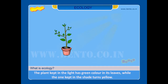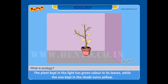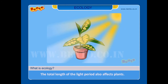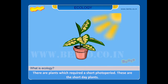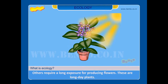The plant kept in the light has green color in its leaves while the one kept in the shade turns yellow. The total length of the light period also affects plants. There are plants which require a short photo period — these are the short day plants. Others require a long exposure for producing flowers — these are long day plants.